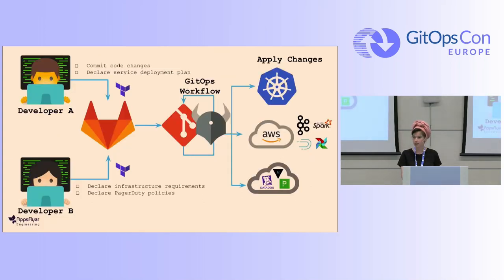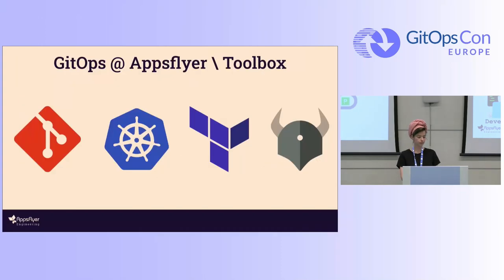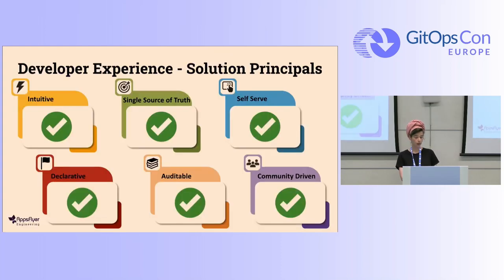Our solution now looks like this: in the Git repository we have the .af metadata folder with the desired state written in Terraform. Then the GitOps workflow takes the desired state, all the changes, and integrates it to all our resources — as long as it conforms to the OPA policy. Our toolbox is: Git, Kubernetes for deployment, Terraform for the desired state, and OPA for policy. Just by that, we covered all the principles — intuitive, single source of truth, auditable from Git, Terraform is self-serve and declarative, and all our toolbox is community-driven using existing CNCF tools.